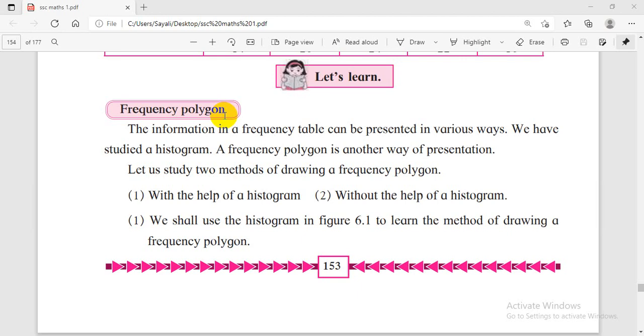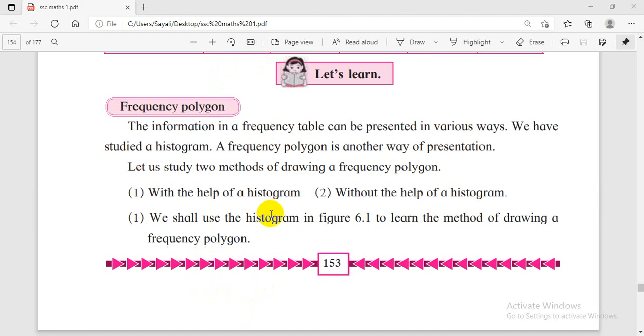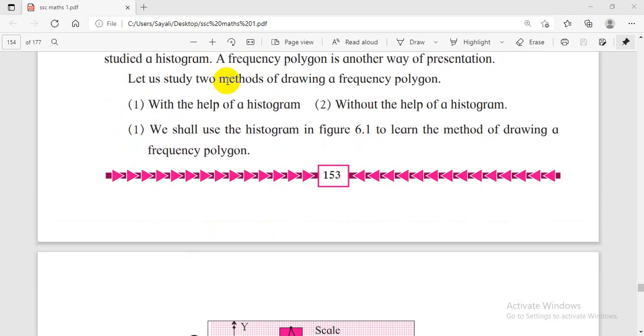Now frequency polygon is drawn in two different ways: with the help of histogram and without the help of histogram. So I will explain these things with the help of your book only. I am not going to draw any figures here because I do not have graph paper and there are lots of limitations whenever I draw figures.